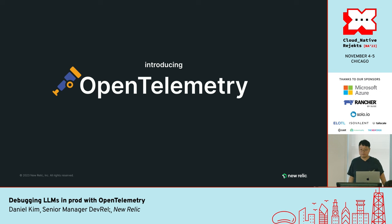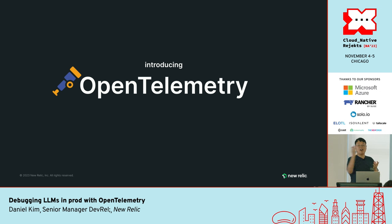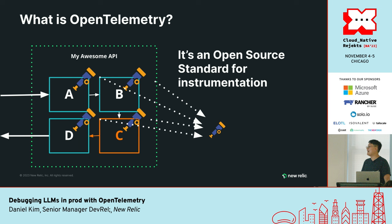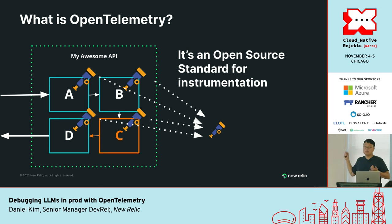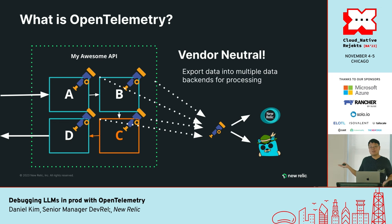That's where OpenTelemetry comes in — a way that you can collect tracing data from your applications. It's a CNCF open source project. There have been so many awesome talks about it today and yesterday. It is basically an open source standard for instrumentation — a way that you can collect trace data, metrics, and logs from your applications in a multitude of languages. The great thing about it is that you can export it to whoever you want, whether it's a vendor like New Relic or an open source monitoring solution like Jaeger.